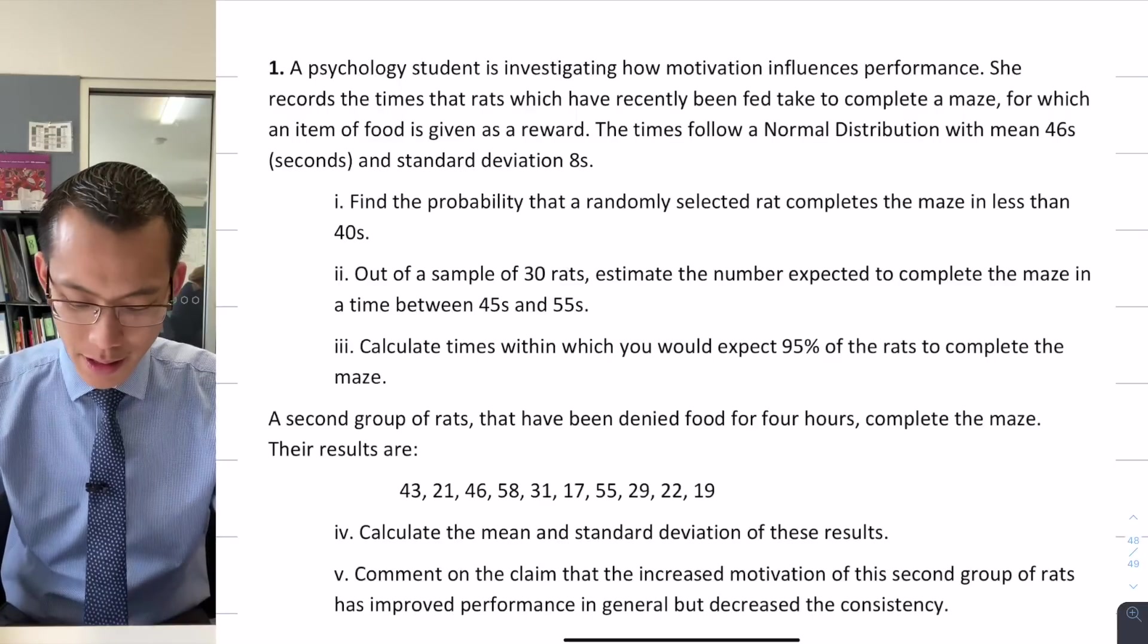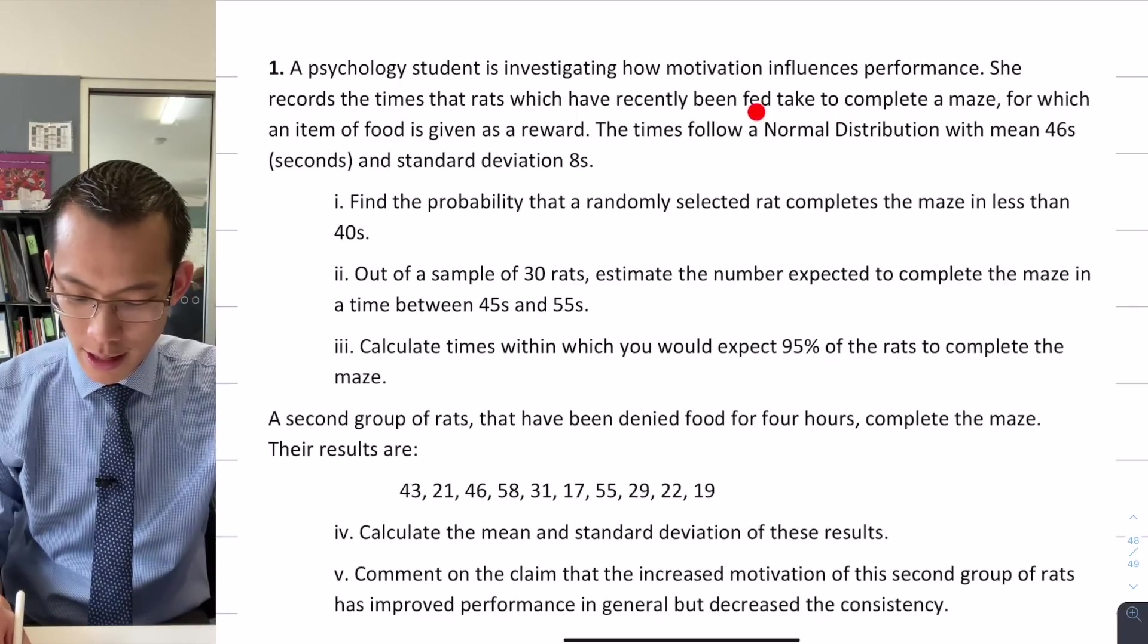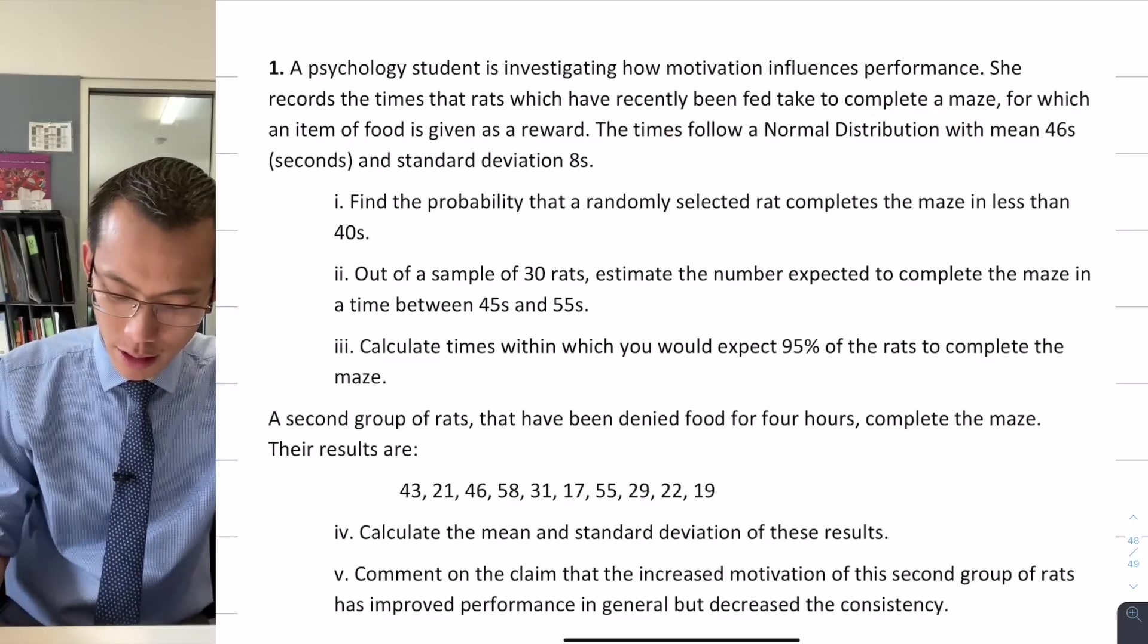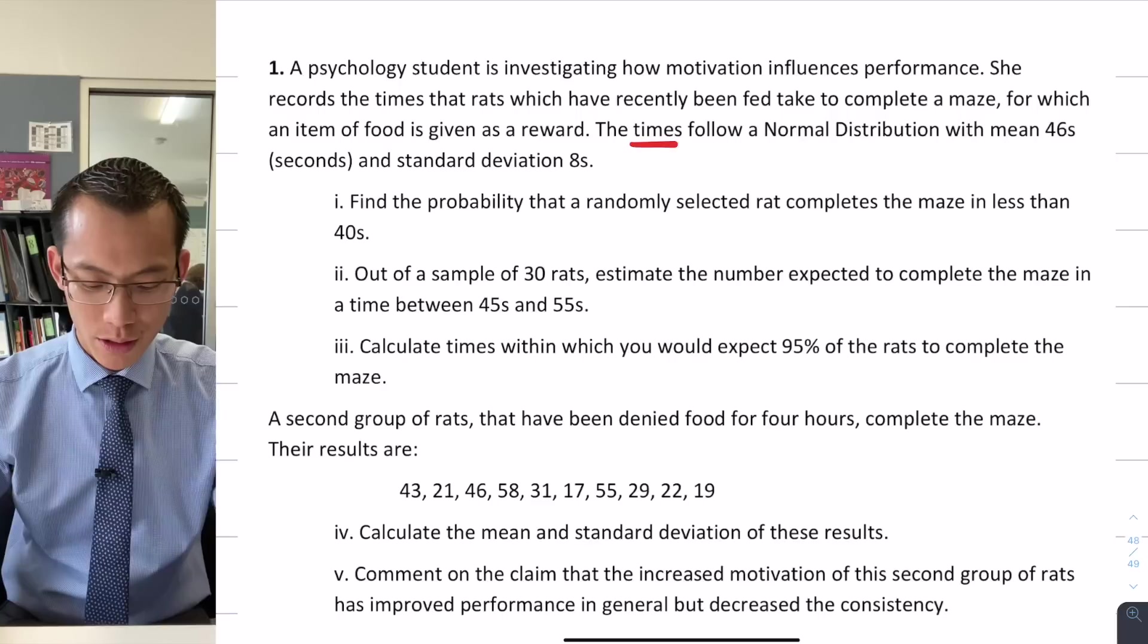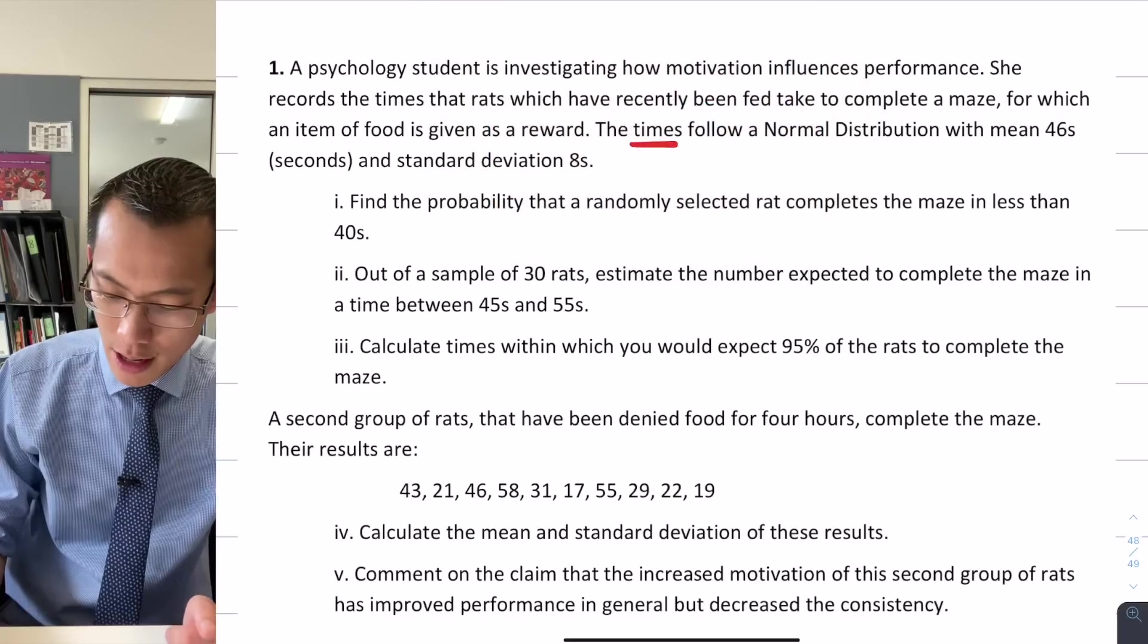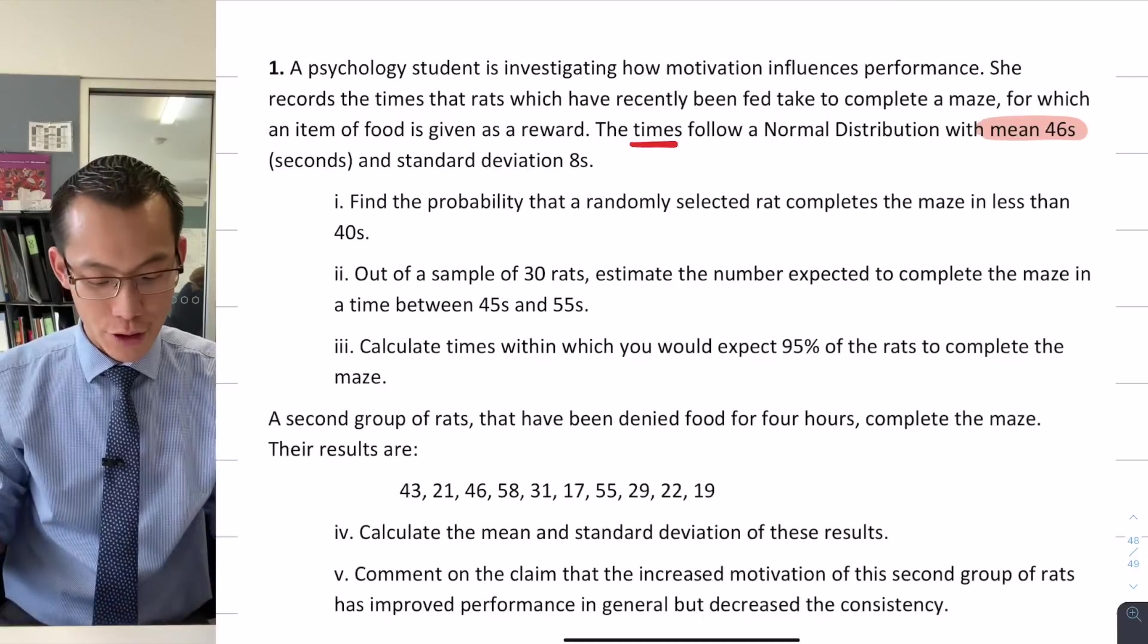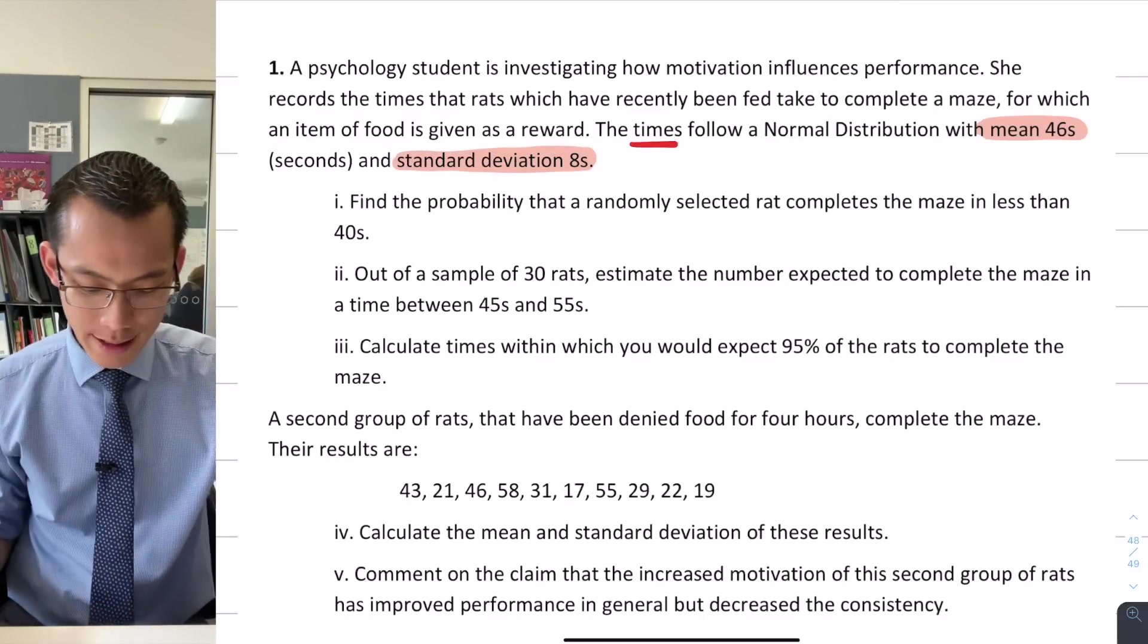You've got a psychology student who's investigating how motivation influences performance. She's doing this experiment with rats. The particular thing we have a look at is the maze that's being completed and the times that are being recorded in order to get a sense of how quickly or slowly these rats are going. We fairly quickly get some important information here. You've got a mean of 46 seconds, that's how long the average rat takes to go through, and then you've got your standard deviation of 8 seconds.